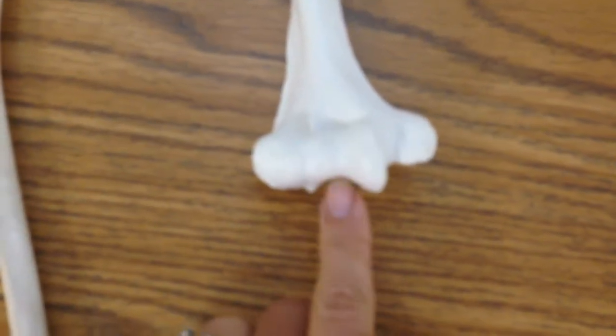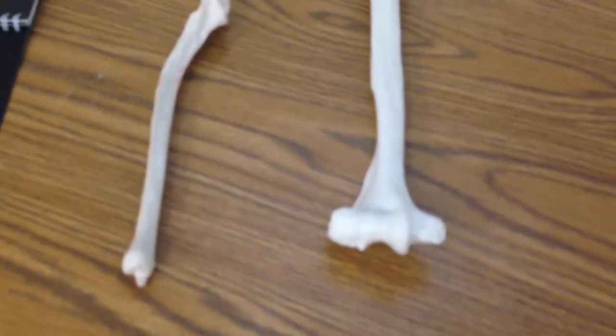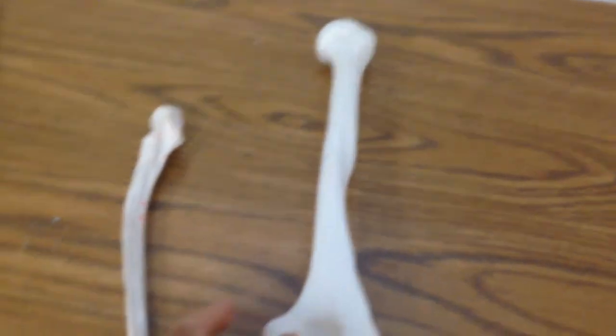We have the trochlea, where the trochlear notch is going to fit in. Let's turn this around and take a quick look at the back.